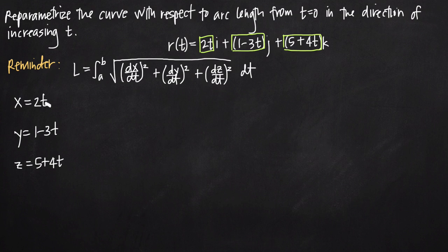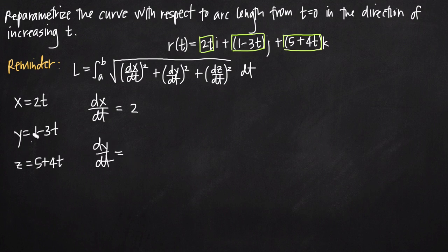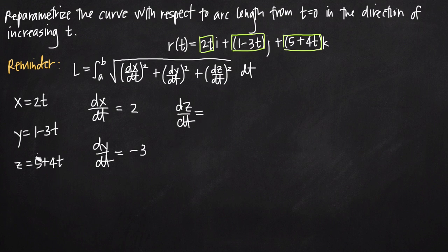Now we find the derivatives of each of these functions with respect to t. dx/dt, the derivative of 2t, is equal to 2. For dy/dt, the derivative of 1 is 0 and the derivative of negative 3t is negative 3, so we get negative 3. For dz/dt, the 5 goes away (derivative is 0), and the derivative of 4t is just 4.